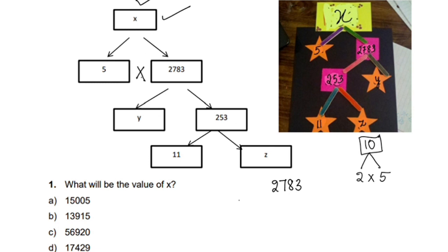We will multiply to find the value of x. 3 into 5 is 15. 8 times 5 is 40 plus 1 is 41. 7 times 5 is 35 plus 4 is 39. 5 times 2 is 10 plus 3 is 13.